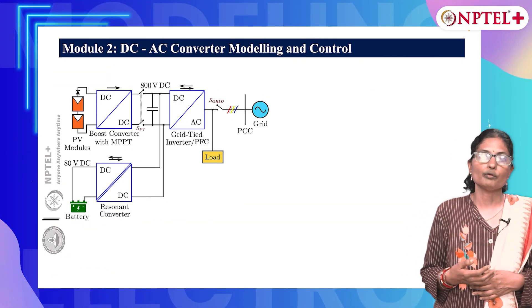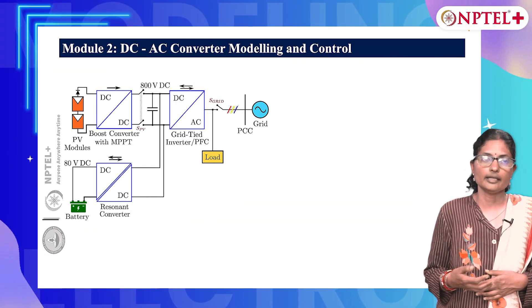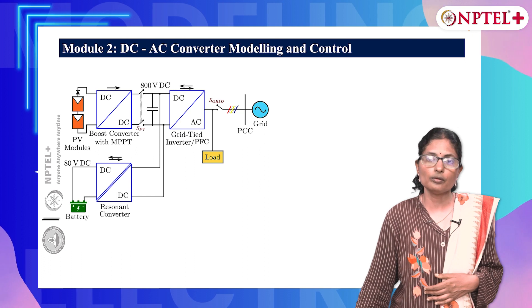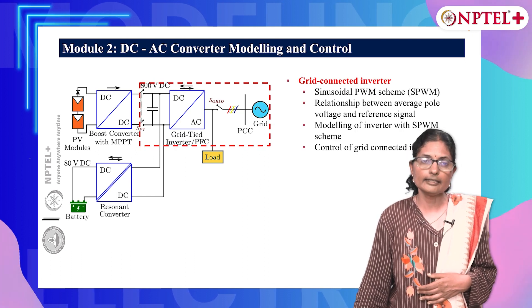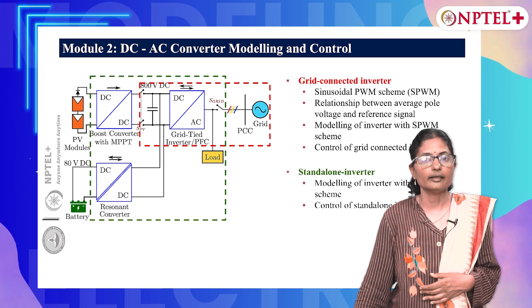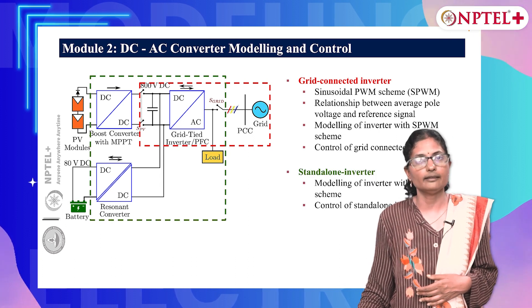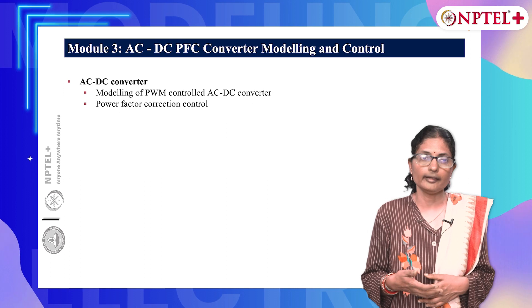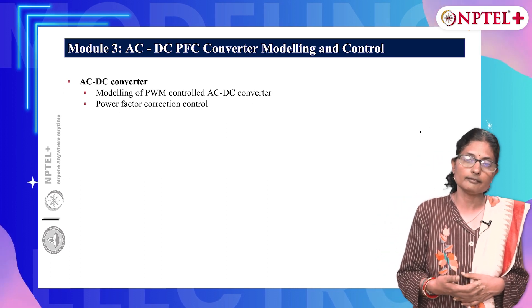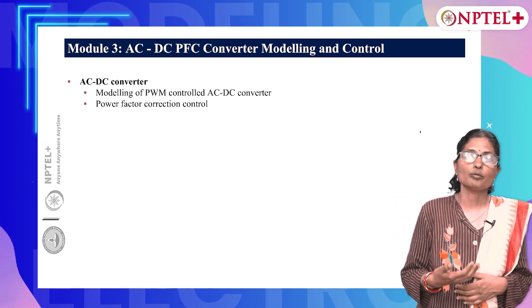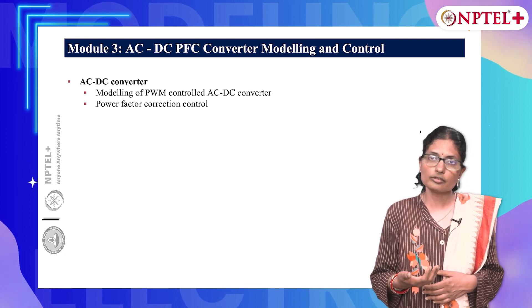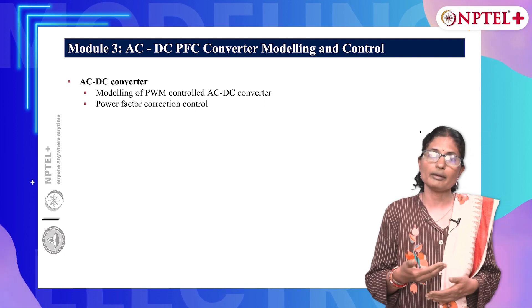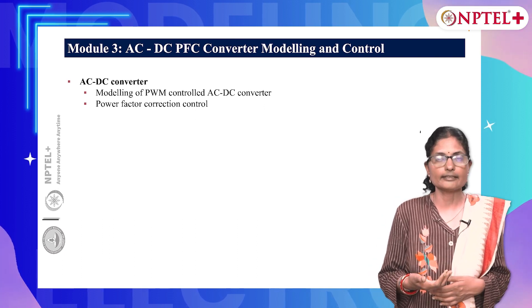In Module 2, we shall see the modeling and control for the grid-tied DC to AC inverter, and modeling and control for the inverter feeding standalone loads. In Module 3, the DC to AC inverter modeling and control to function as a power factor correction converter for battery charging applications is covered.